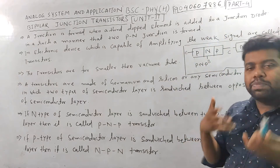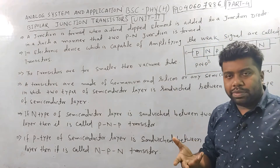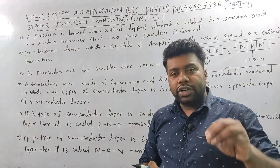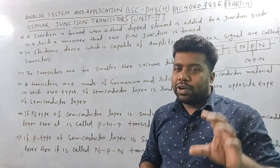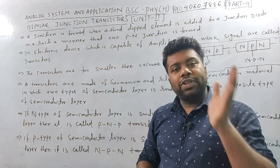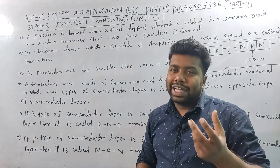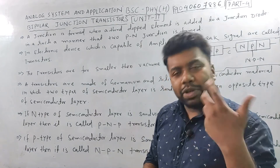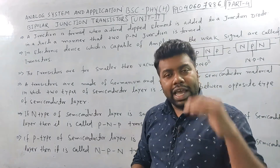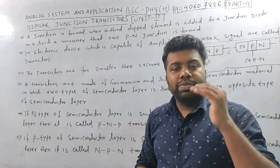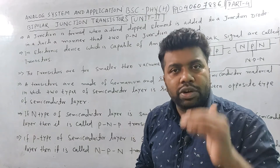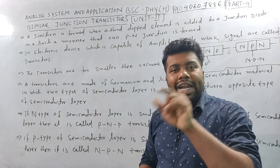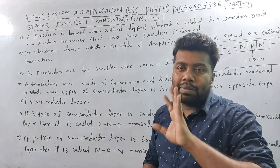P-type semiconductor means positive type semiconductor. The majority charge carrier in P-type semiconductor is holes, and holes carry positive charge. In N-type semiconductor, the majority charge carrier is electrons — it is negative type.